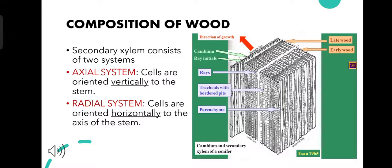Composition of wood. In gymnosperms, the secondary xylem or the wood consists of two systems, namely the axial system and the radial system. In the axial system, the cells are oriented vertically towards the axis of the stem. Whereas in the radial system, the cells are oriented horizontally to the axis of the stem.